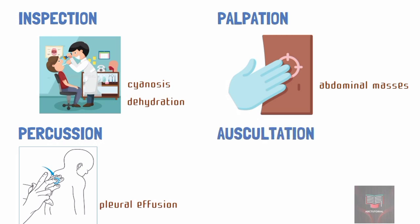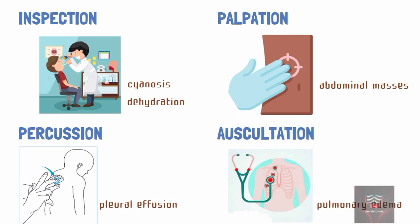In auscultation, the examiner listens to body sounds to evaluate the functioning of certain organs, often using a stethoscope to amplify the sounds. An example is auscultation of the lung during breathing to check for cracking sounds associated with abnormal fluid accumulation.